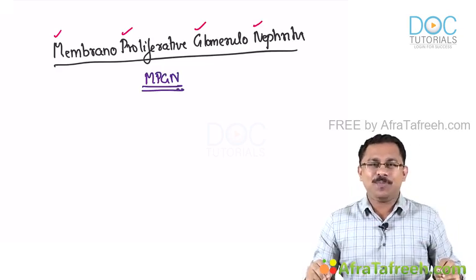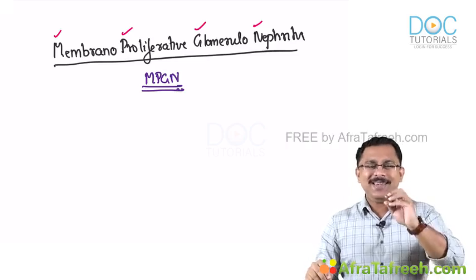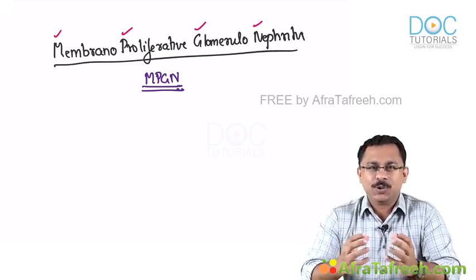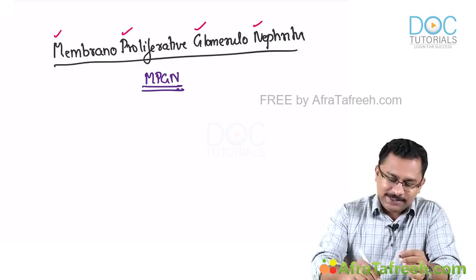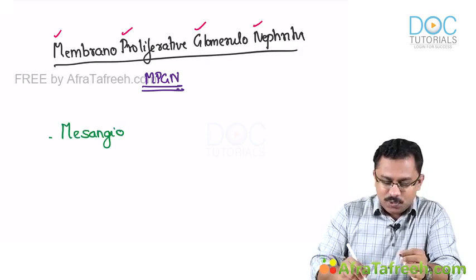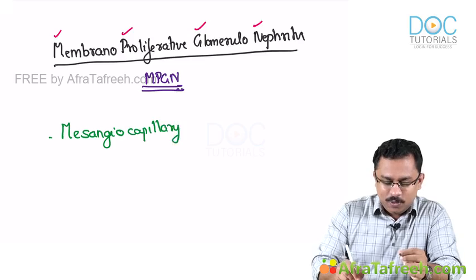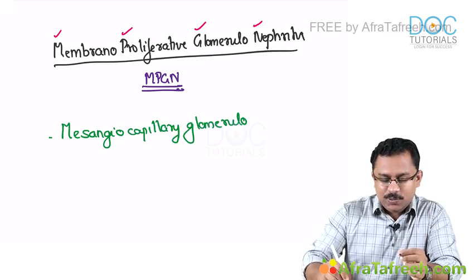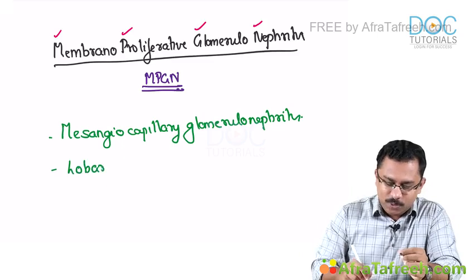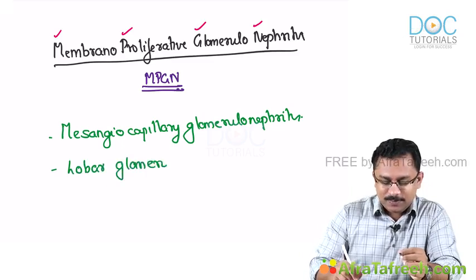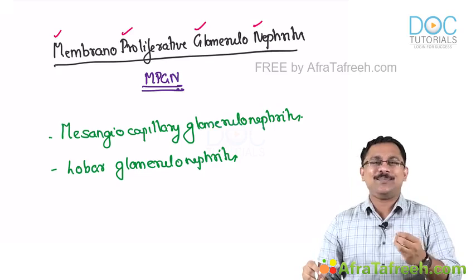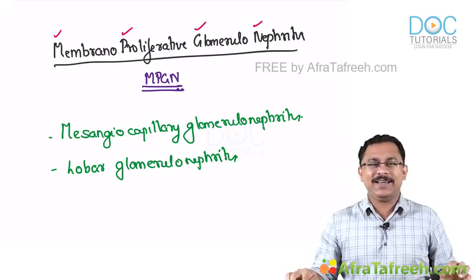This is again a very important topic for your exams. There are two other synonyms for MPGN which you should know. One is mesangiocapillary glomerulonephritis, and it is also referred to as lobar glomerulonephritis.